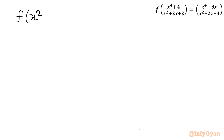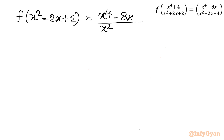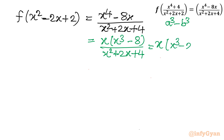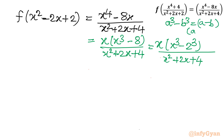So we can write: f(x² - 2x + 2) = (x⁴ - 8x)/(x² + 2x + 4). Now I will use algebraic simplification. x is common in the numerator, so taking x out leaves x³ - 8 over x² + 2x + 4. I can see the identity a³ - b³, since x³ - 8 = x³ - 2³. This identity factors as (a - b)(a² + ab + b²).